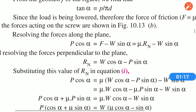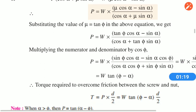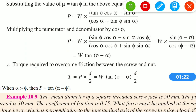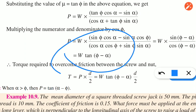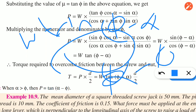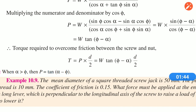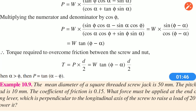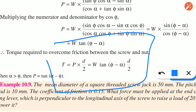One more formula: for raising, W equals tan(alpha + phi). For lowering, W equals tan(phi minus alpha) when phi is greater than alpha, and alpha minus phi otherwise. The difference is a minus value, so it is phi minus alpha or alpha minus phi. When you see the torque due to friction, the torque of friction is T equal to P into D by 2.